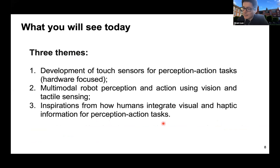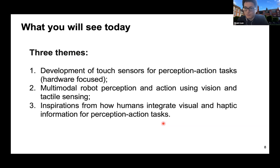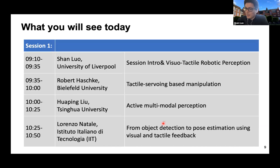We have three themes for the workshop. First is hardware-focused: development of touch sensors for perception-action tasks. Second is multi-modal robot perception and action using vision and tactile sensing. Third is more on the biological side: drawing inspiration from how humans integrate vision and haptic information for perception-action tasks. We intended to divide our sessions according to these three themes, but because of time zone differences, we had to spread talks from different themes across different sessions.